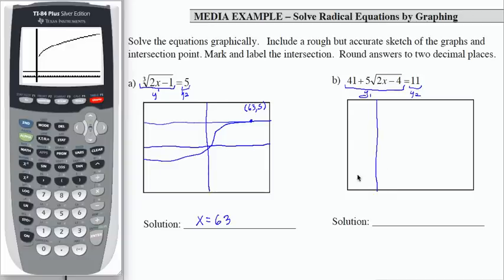So let me just draw kind of what we have here and then the radical part is that and the y equals 11 is here. They do not cross meaning there is no solution for this particular equation.